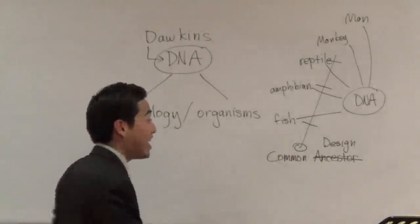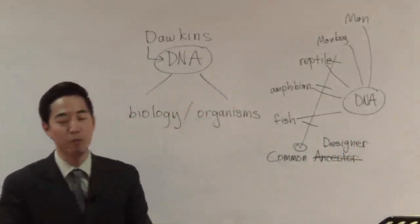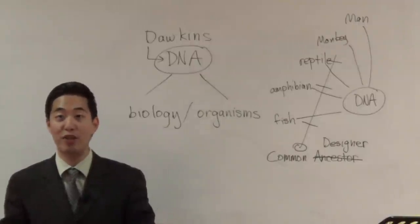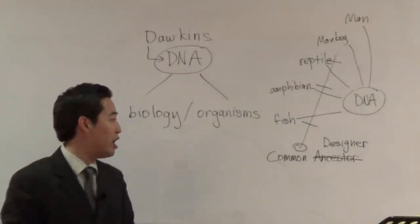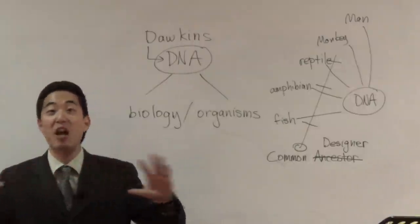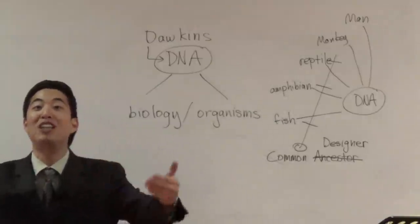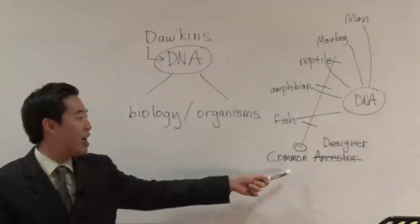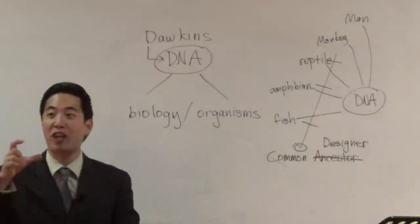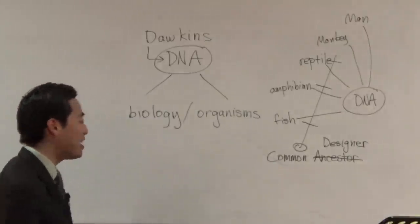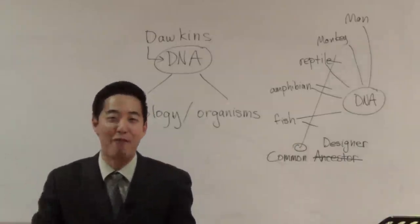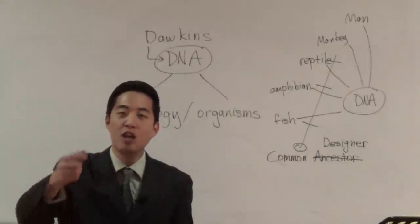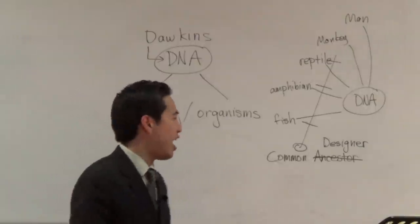Richard Dawkins actually knows that. That's why when he mentioned common ancestor, he said the only thing that would argue against that is a common designer argument. And you know how he argued against it? Nothing. He just acted like James White, using a sarcastic tone: 'Oh, the only option is common designer.' He doesn't even prove his case — he just uses a sarcastic tone to make people laugh along. Just because you use a sarcastic tone, that doesn't mean you win. That is a childish, dumb argument.